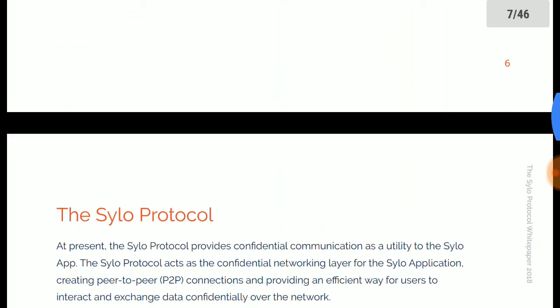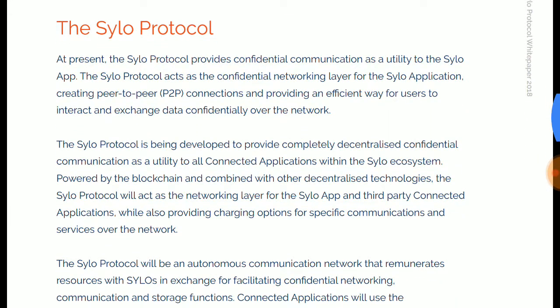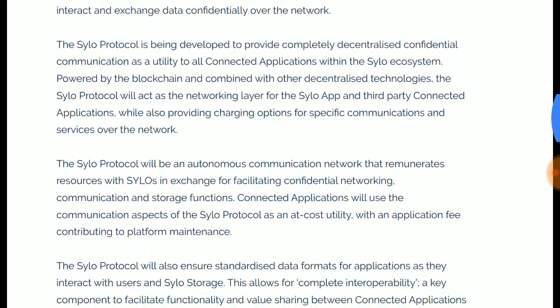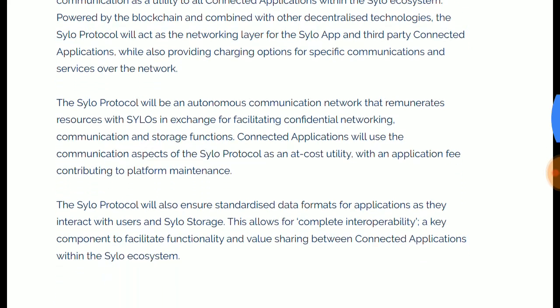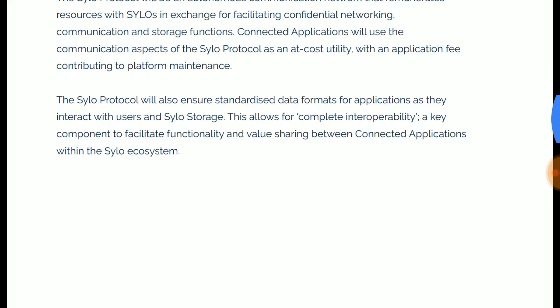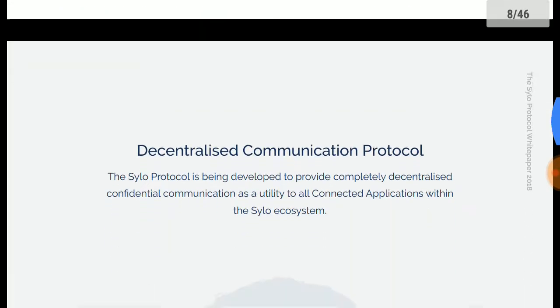The Silo Protocol provides confidential communication and peer-to-peer connection, and provides an efficient way to communicate. Silo Protocol is being developed as a decentralized confidential communication network. It will be an autonomous communication network that remunerates resources with Silo tokens in exchange. Silo Protocol will also ensure standardized data formats for applications as they interact with users and Silo storage.